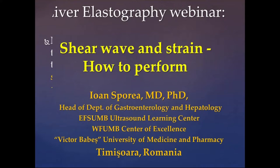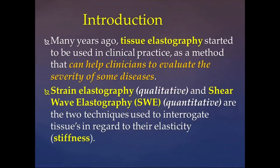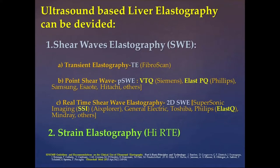My task today is to present something between shear waves and strain elastography and how to perform this. We introduced, many years ago, tissue elastography that can help the clinician in daily activity to see the stability of some diseases. Strain elastography is a qualitative method, and shear wave elastography is a quantitative one, and both assess the stiffness of the tissue. We have two types of liver elastography from the ultrasound point of view: shear wave elastography (SWE) and strain elastography.